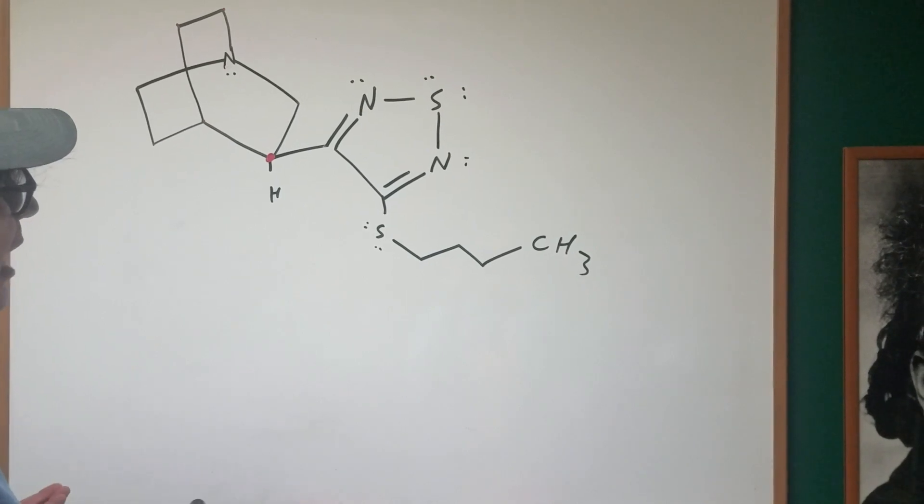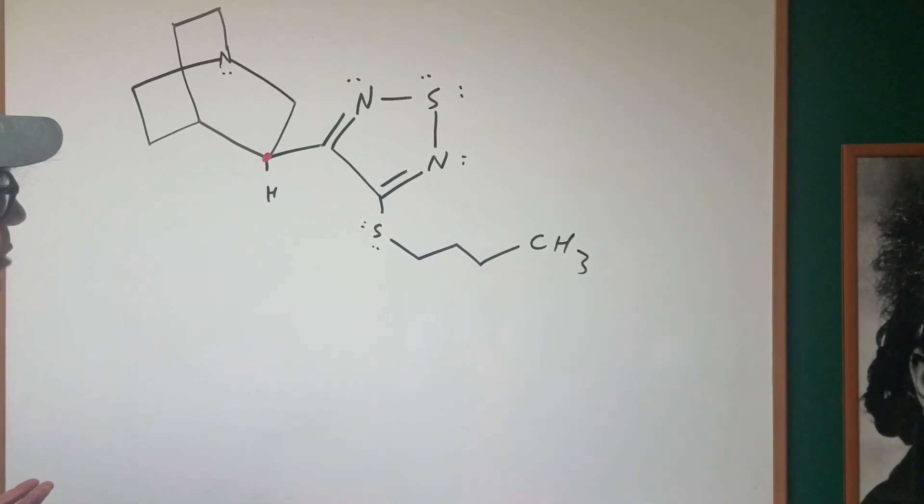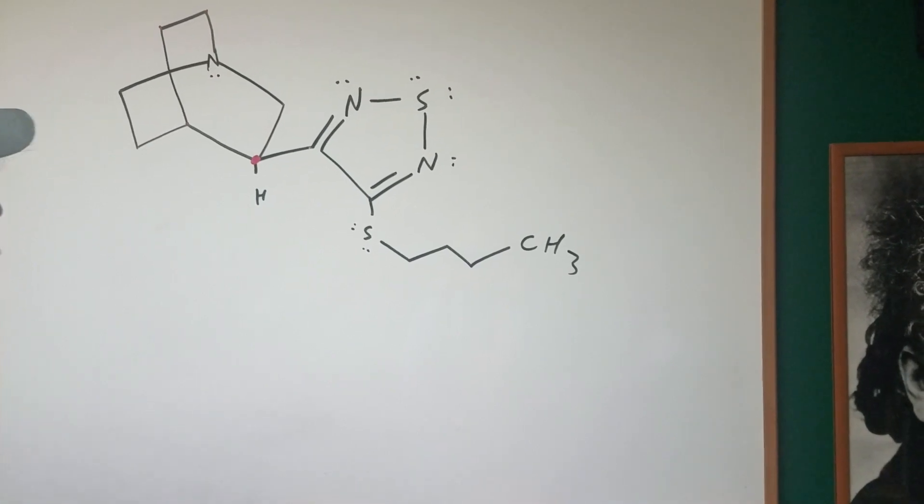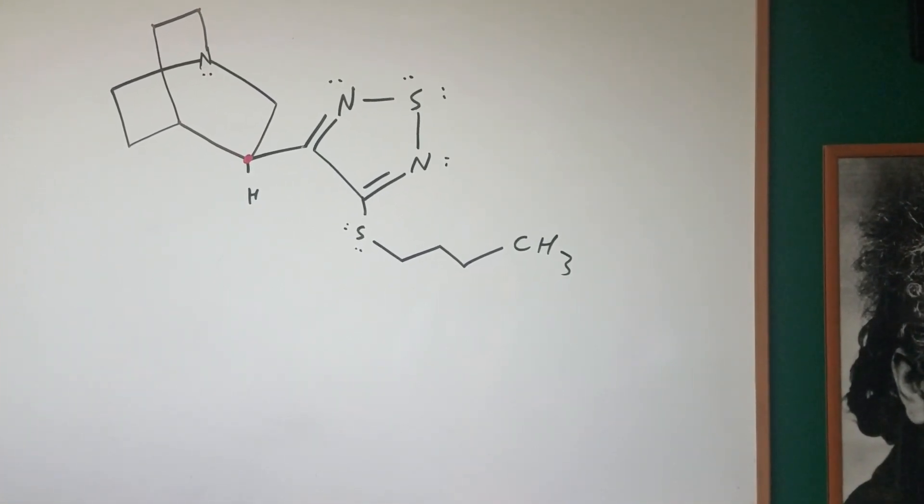And by the way, you can have a chiral atom that's non-carbon. For instance, you can have a chiral sulfur or a chiral nitrogen. We don't see that in this instance.